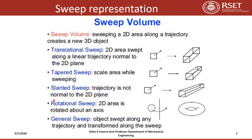In rotational sweep, the 2D area is rotated about an axis. A circular, rectangular, square, or regular 2D area is rotated about an axis, allowing axisymmetric objects to be easily created. In general sweep, the object is swept along any trajectory and transformed along the sweep path.